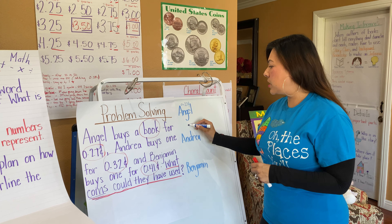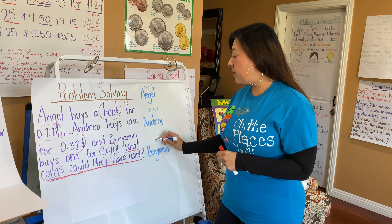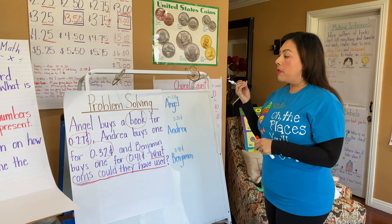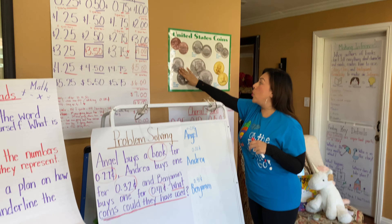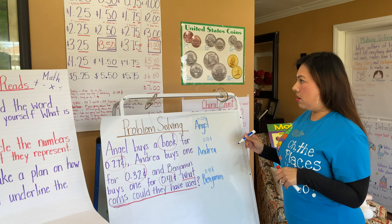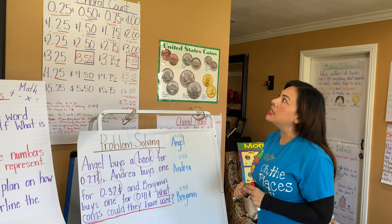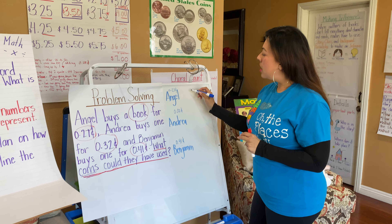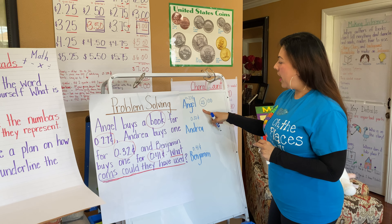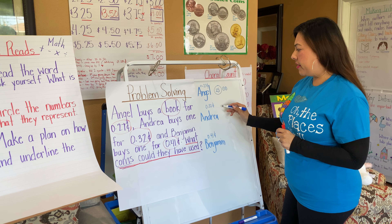Here's what we're going to do today — something different. I want you to write in a paper or journal: write Angel's name, Andrea's name, and Benjamin's name. Above each name, keep track of the amounts — Angel had 27 cents, Andrea wants a book for 32 cents. We're focusing on these four coins: quarter is 25 cents, penny is 1 cent, nickel is 5 cents, dime is 10 cents.